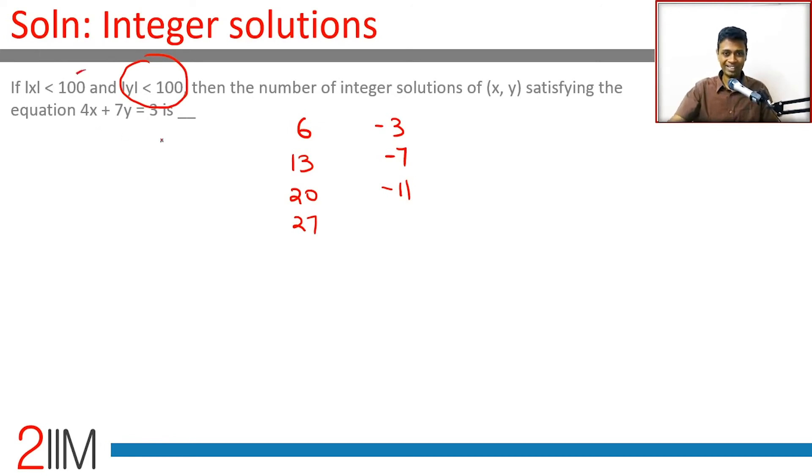And even negative territory, the same idea. It becomes minus 1, this will become plus 1: 4 into minus 1 plus 7 into plus 1. Becomes minus 1, minus 8, minus 15, minus 22, minus 29 and so on. 27, 34 and so on.